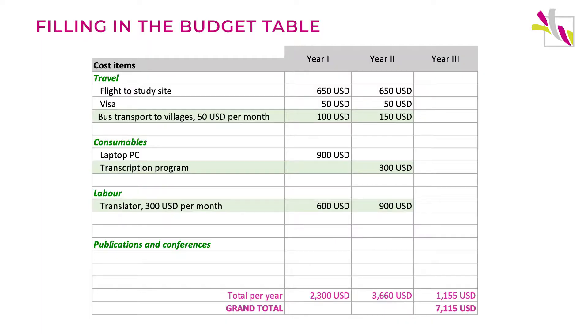I should allocate the incurring costs to the year in which they occur. So for example, if my research is planning to cover 50 household surveys and I'm planning to have only 20 surveys in the first year, I should allocate the costs for conducting those surveys to the first year. And then the remaining 30 should be in the second year — so I basically attribute 40% of the travel and translation costs to year one and 60% to year two.